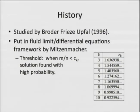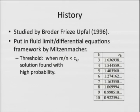This was first studied by Broder, Frieze, and Upfal in 1996. Like the Karp-Sipser paper, you can put it in differential equation form to get tight constants. Again, you have threshold behavior: when the ratio of clauses to variables is below some constant, the pure literal algorithm will find a solution with high probability, and above it will reach a clumping step.